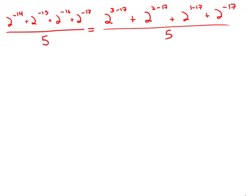Now we'll use that law of exponents that says when we are adding the exponents, we are multiplying the powers. In the first one, we're adding 3 and negative 17, so this would be 2 to the 3 times 2 to the negative 17. The next would be 2 squared times 2 to the negative 17, plus 2 times 2 to the negative 17, plus 2 to the negative 17.